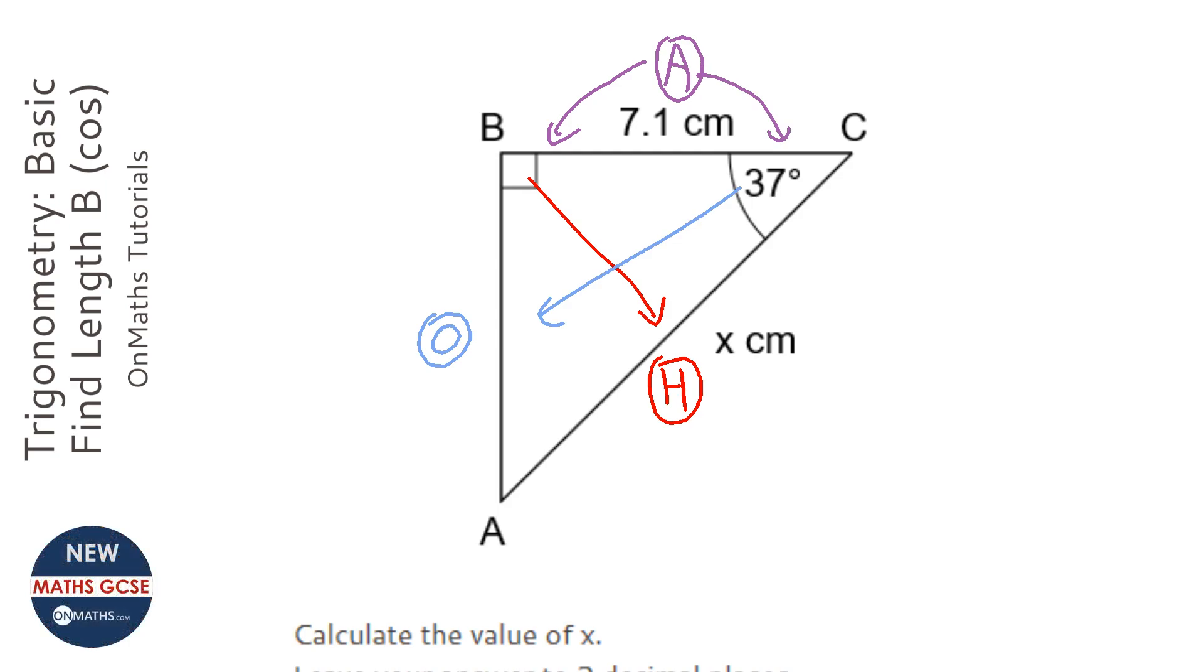The next step is to cross out the one that's not very interesting. The adjacent has 7.1 next to it, the hypotenuse has the x next to it, the opposite has nothing next to it, so let's cross that out.